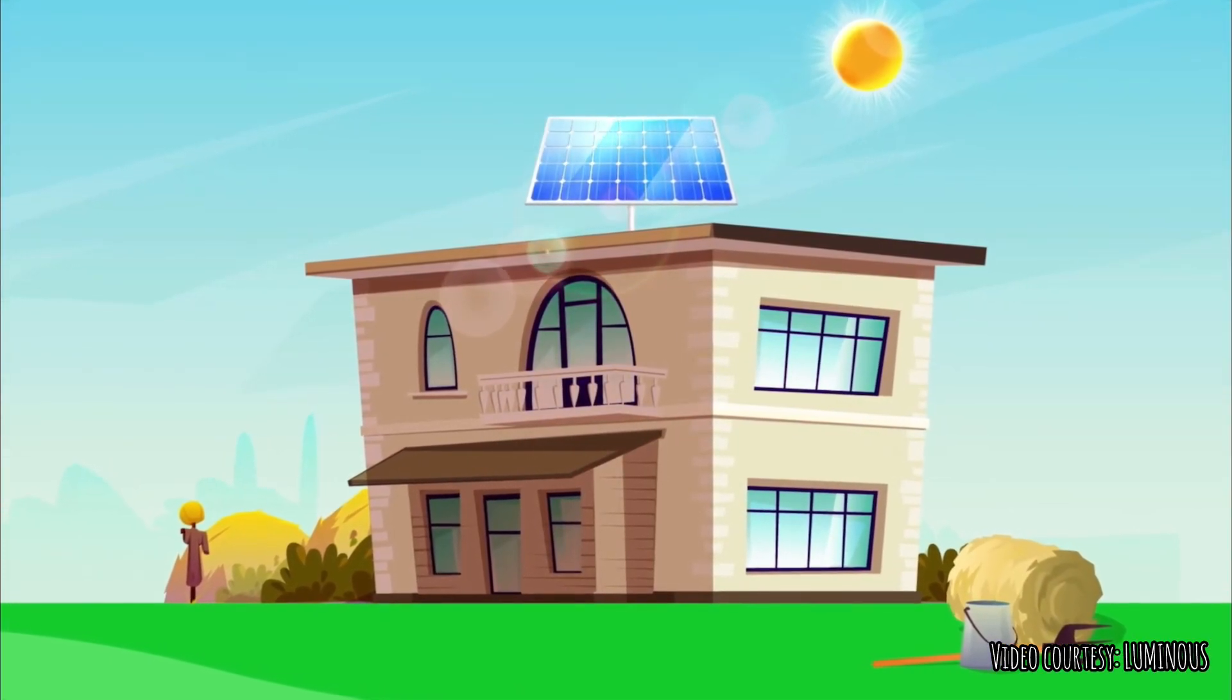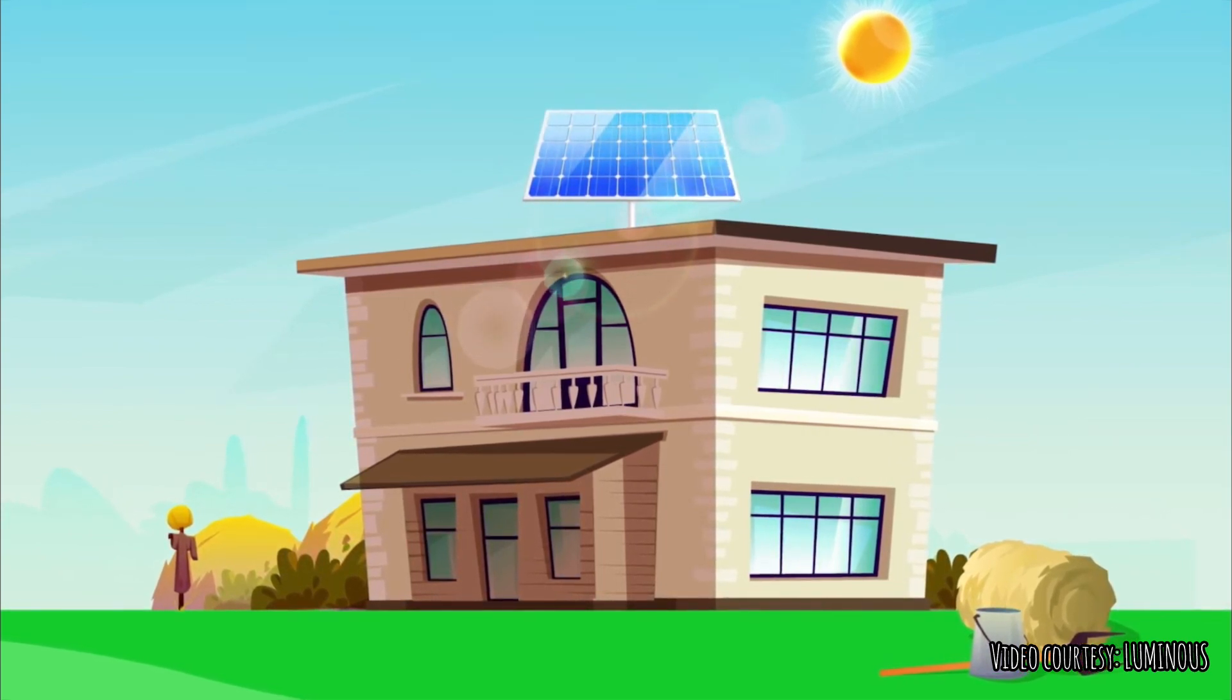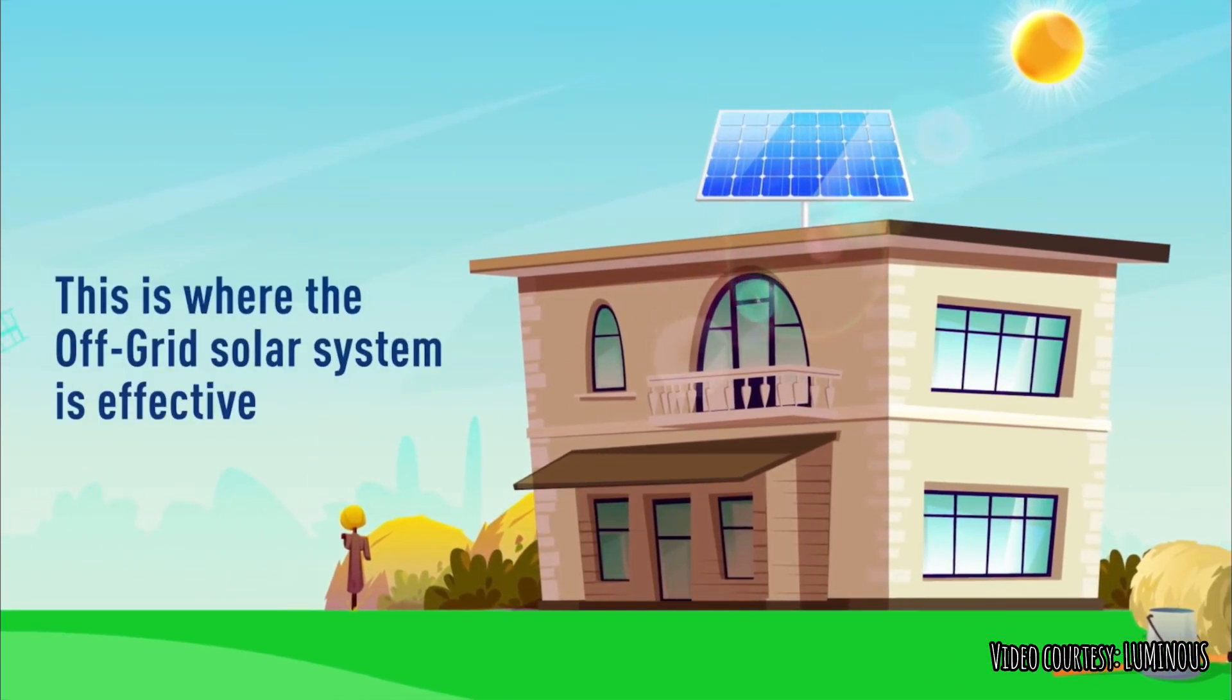So what about places where there is high power outages or there is no power supply at all? This is where the off-grid solar system is effective.